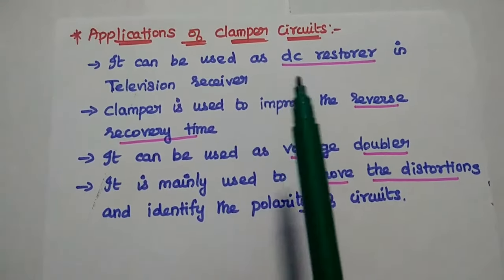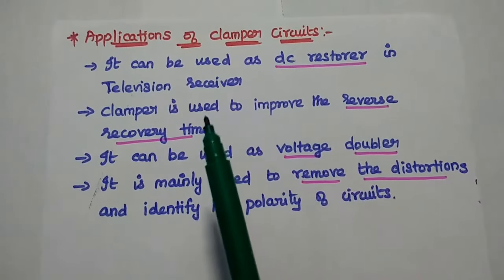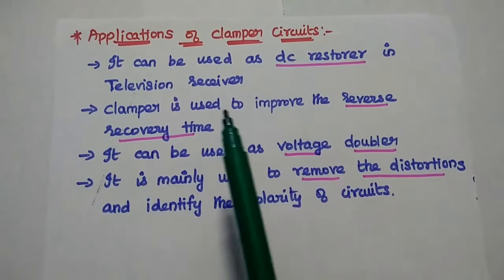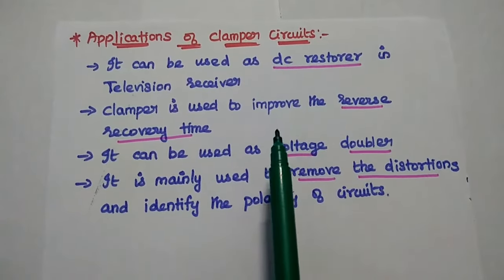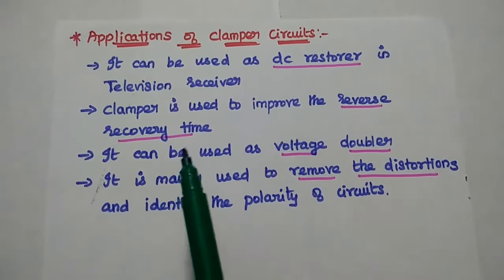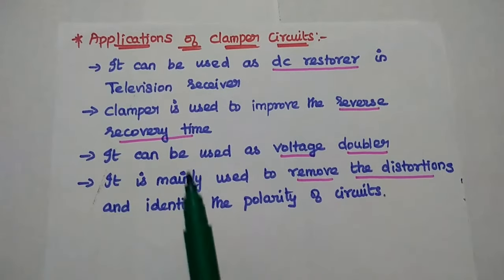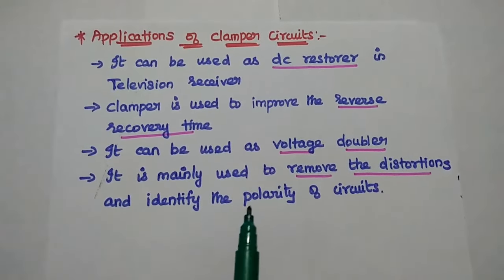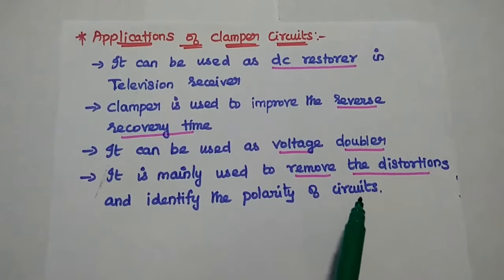Applications of clamper circuits: it can be used as a DC restorer in television receivers; it is also used to improve the reverse recovery time; it can be used as a voltage doubler; and it is used to remove distortions and identify the polarity of circuits.